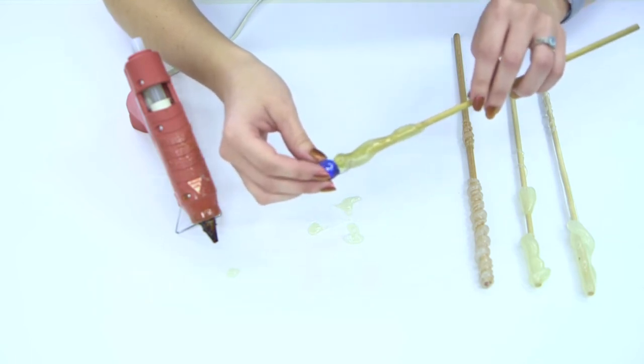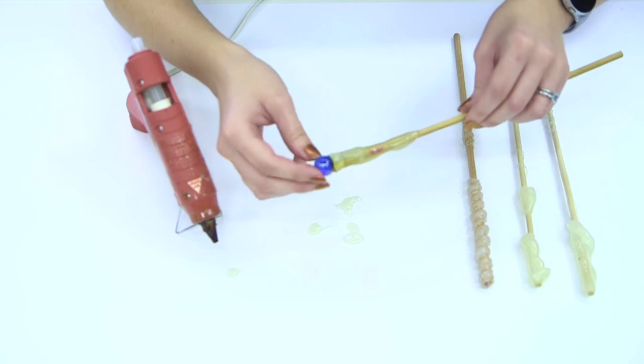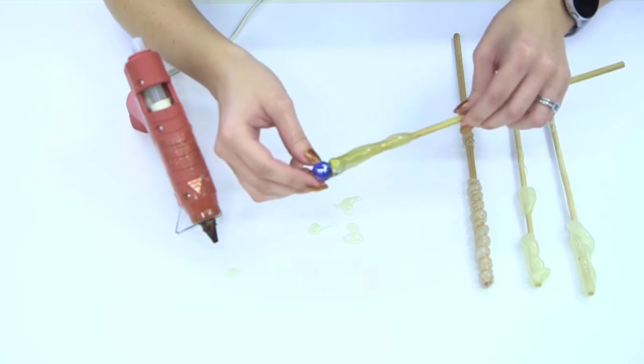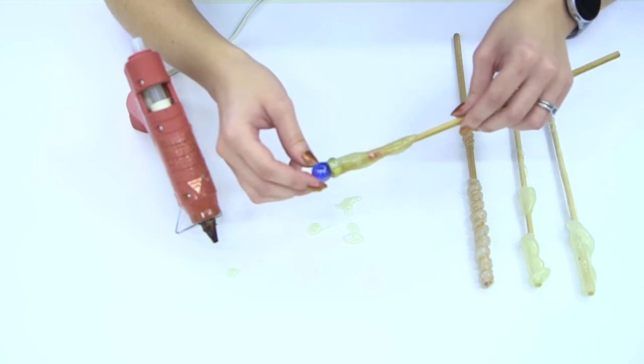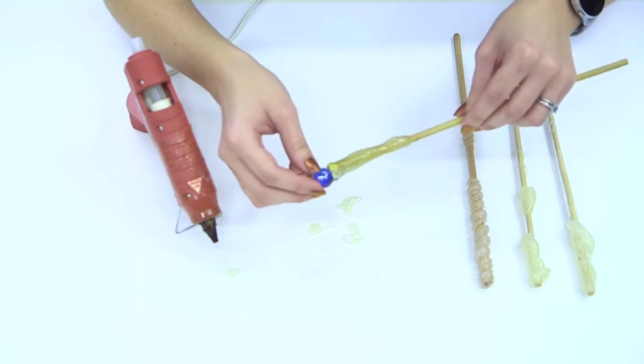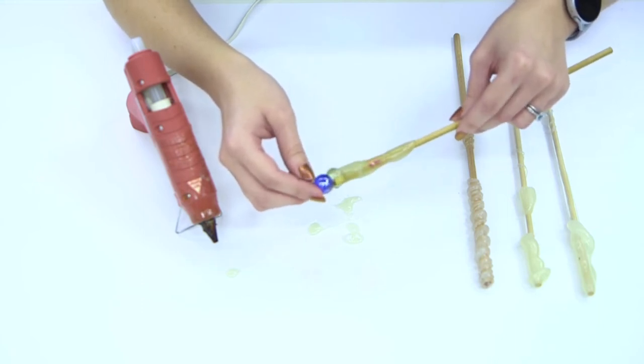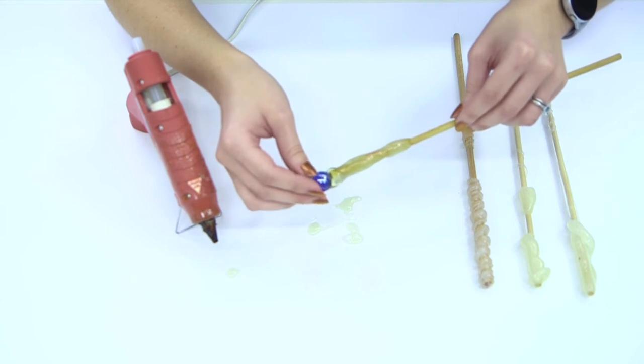And we're going to stick the marble on there and kind of smoosh it in and hold it. There's going to be a lot of holding and waiting and you're also going to have to rotate very slowly so the glue doesn't all drip to one side and just make sure it stays on the glue.